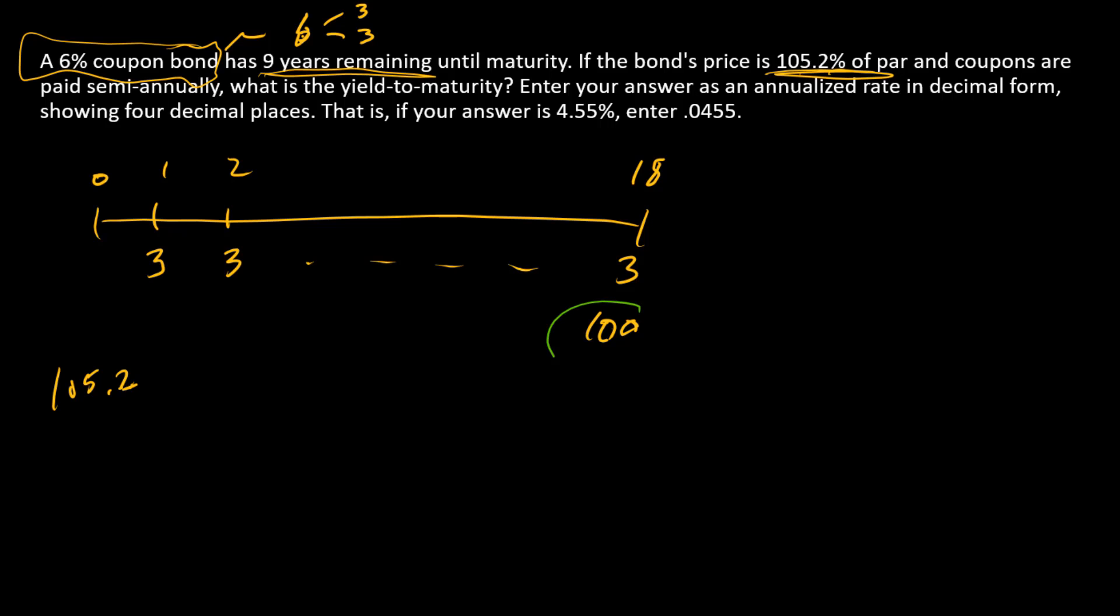Alright, so going to a financial calculator. The $100, since it occurs at the end of the timeline, that's FV. We'll make it positive since the bondholder receives it.